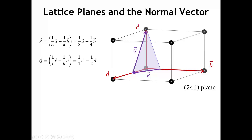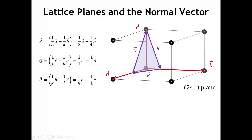We can also write the coordinates for vector Q, which defines another edge of the triangle. That's going to be the point C minus the beginning point A over 2. Two vectors is sufficient to specify the orientation of a plane. For completeness, the third side of the triangle gives us vector R, whose value would be B over 4 minus C.